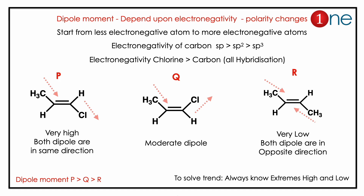For structure P, the dipole moment is definitely high. For structure R, it is very low because the dipole moments oppose each other. Structure Q will be moderate, falling between them. So the order will be P > Q > R. The key concept here is that to solve any such trend, you should know the extreme values — that is, the highest and the lowest.